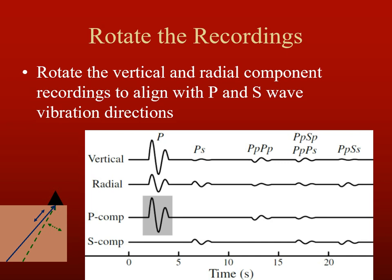The next step is to rotate the recordings from the vertical and radial components to components directly aligned with the P wave and S wave vibration directions. This cleans up the recording of P wave versus S wave energy. This is particularly helpful because the next step is deconvolution: we use the P wave energy as a good approximation of the source time function — the energy released in the earthquake — which can vary across different earthquakes. Since receiver functions stack energy from many different earthquake recordings traveling similar paths to the station, we must normalize by removing the source time function.